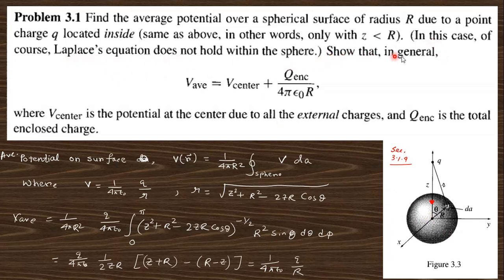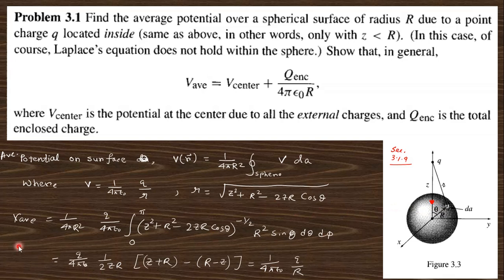Since the charge is inside, the Laplace equation does not hold within this sphere. In general, the average potential will be V_centre — the potential at the centre due to all external charges — plus q_enclosed divided by 4π ε₀ r. The average potential on the surface is the surface integral of the potential over the total surface area, where curly-r is the distance from the point within the sphere.